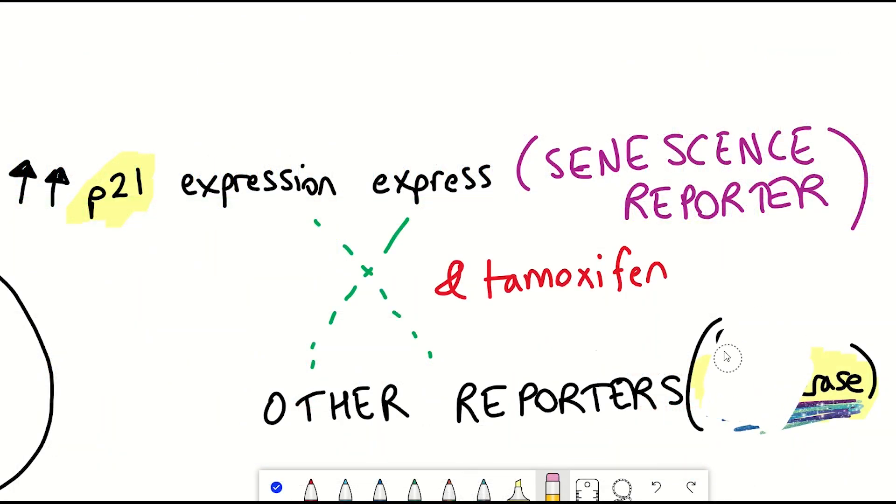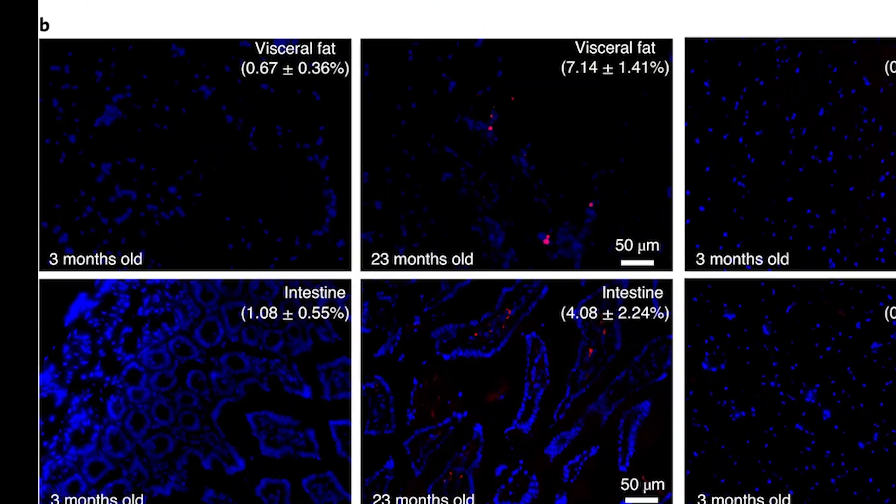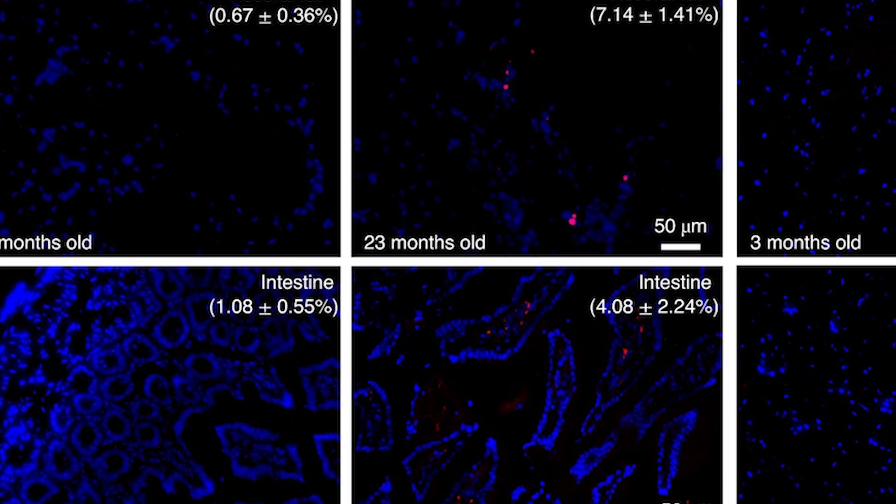But to get a higher resolution vision of the cells, they then used a fluorescent reporter, this time such that the P21 high cells are red under the microscope. As you can hopefully see in these images, in the old mice, there was around 1.5 to 10% of the red cells. And you can see this in visceral fat tissue, brain, intestine, heart, liver, and skeletal muscle tissue.